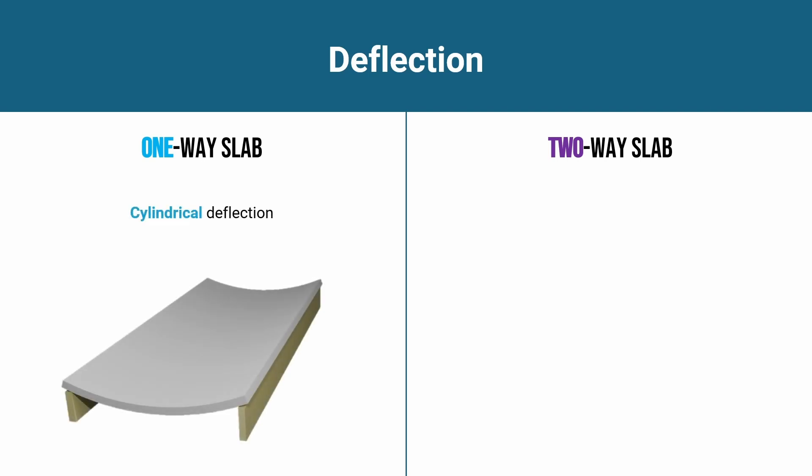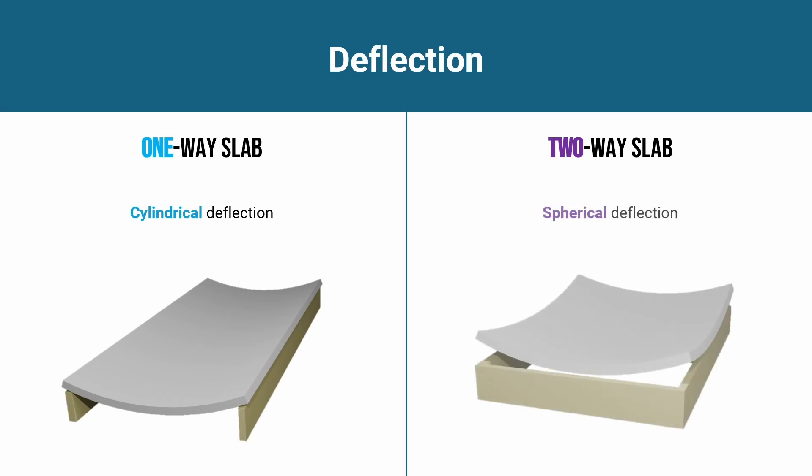In the case of a one-way slab, the deflection is a cylindrical deflection, also called a parabolic deflection. In two-way slabs, it's going to be a spherical deflection.